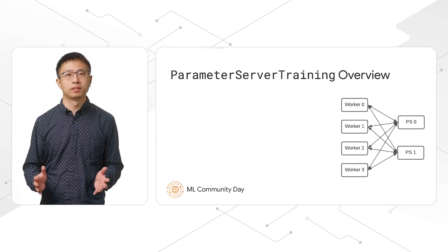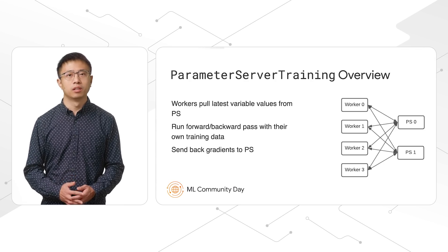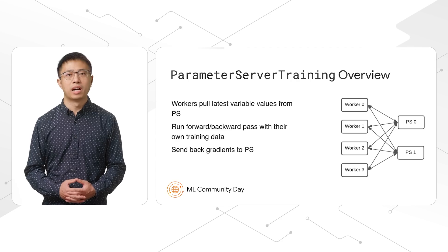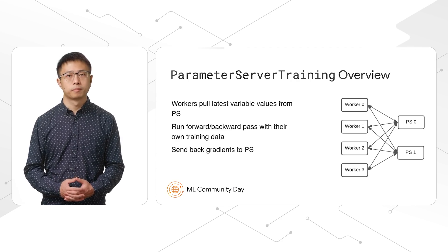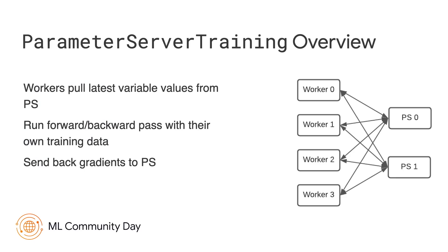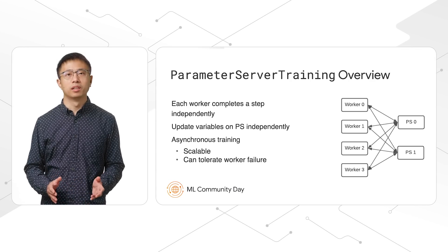So what is parameter server training? In this approach, variables are stored on dedicated servers called parameter servers, shared by all training workers. Most of the computation happens on these workers. In each training step, workers pull the latest variable values from parameter servers, run forward and backward passes with their own training data, then send back gradients to parameter servers. Each worker completes a training step on their own and updates the variables on parameter servers independently. This is why we call it asynchronous training.